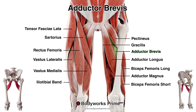The adductor brevis is located between the pectineus and the adductor longus. Both those muscles are superficial to the adductor brevis, so they're both covering it up. As for our last adductor muscle, we've got the adductor magnus, which is the deepest muscle of the adductor group — going underneath both the adductor longus and the adductor brevis. If you'd like to learn more about any of the muscles labelled here, I've got videos on all of those on my YouTube channel.